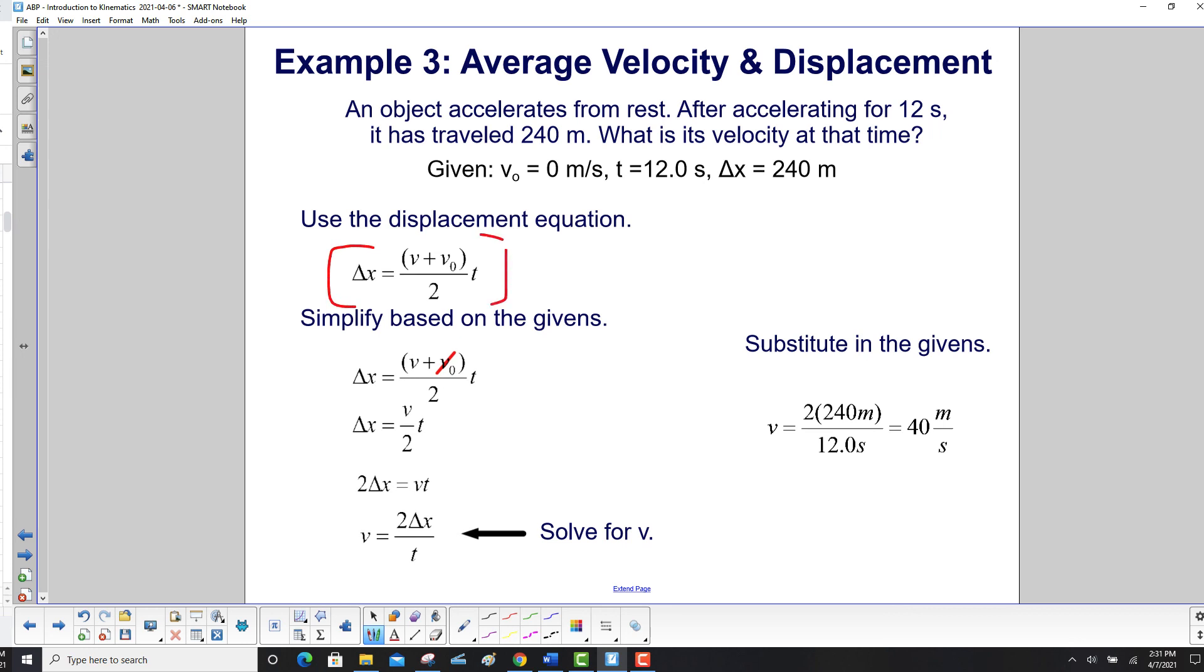So we'll be using the displacement equation. And the first thing you do, we always say solve it algebraically. The one exception to that is if there are any terms that are equal to zero, get rid of them right away. So we do that, and we have Δx is v over 2 times t.